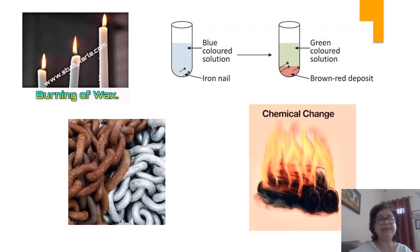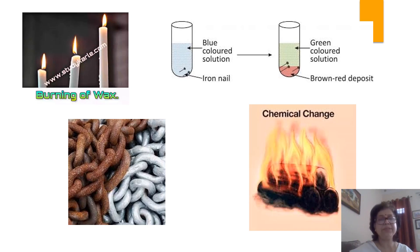Different examples: burning of wax is a chemical change. In a test tube with blue copper sulfate solution, when we add two or three iron nails, after 30 minutes we observe that the blue solution converts to green color, and a reddish-brown deposit forms on the iron nails. This reaction between copper sulfate and iron nails is a type of chemical change. Rusting of iron is also a chemical change, and burning of wood is also a chemical change.